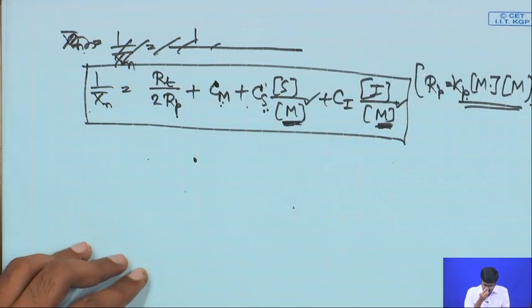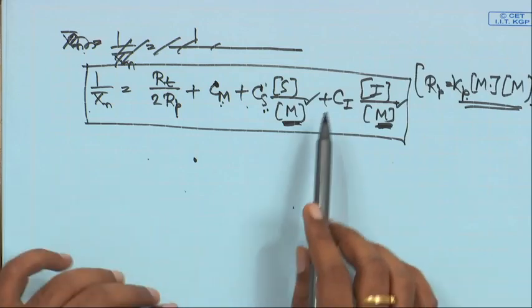We will stop here and continue to explore this equation in the next class in terms of how we can design a polymerization reaction to obtain a particular molecular weight. This equation shows how X̄n is affected by chain transfer to monomer, to solvent or chain transfer agent, and to initiator — all quantified through chain transfer constants and their concentrations. That is the importance of this equation. Till then, thank you and goodbye.